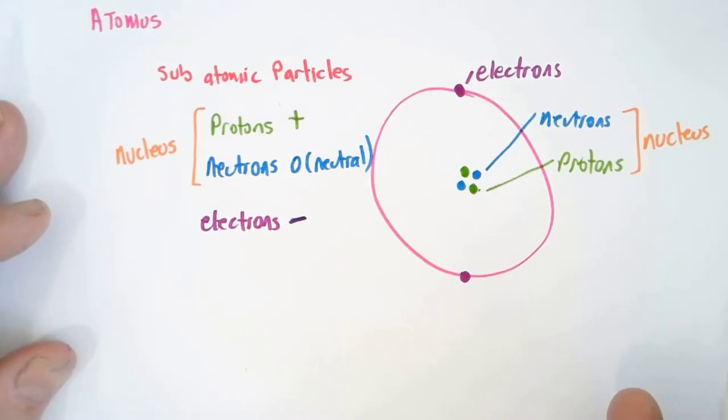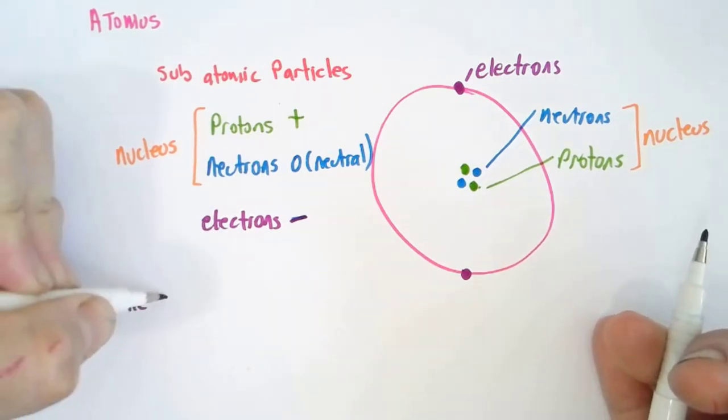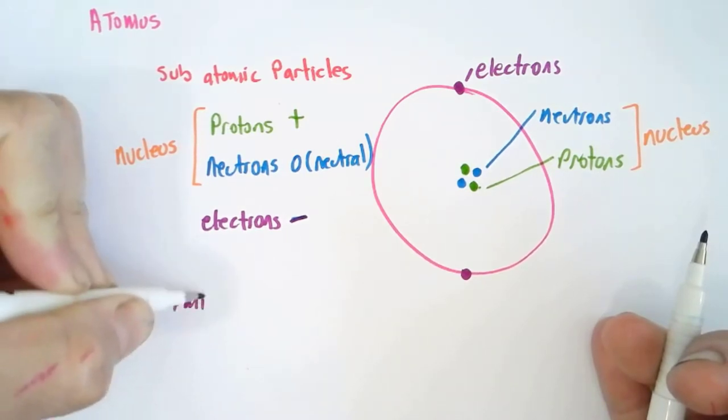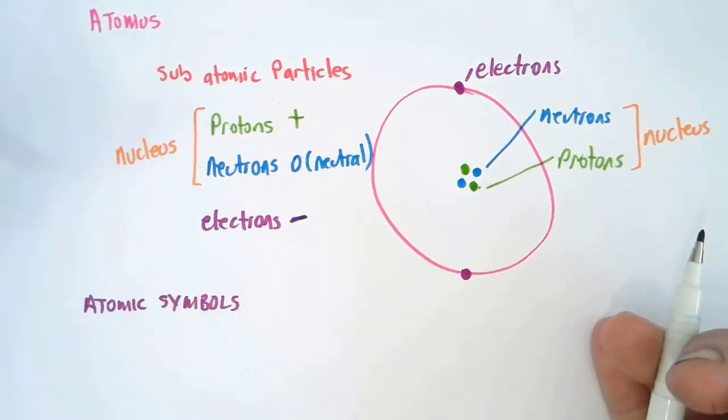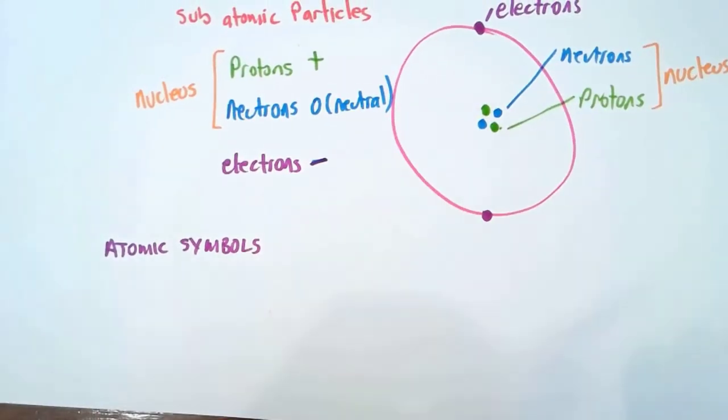It's the number of protons in an atom that determines the type of element that atom is from. We can actually express that in something called the atomic symbol. It's a shorthand way for scientists and chemists to describe a lot of information about the atom.